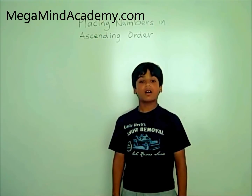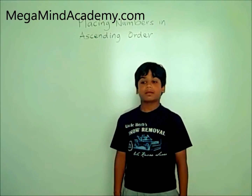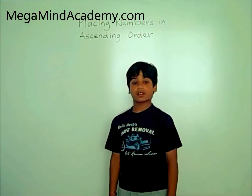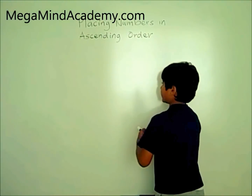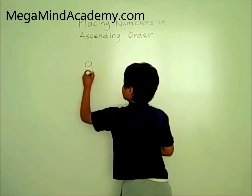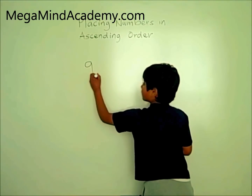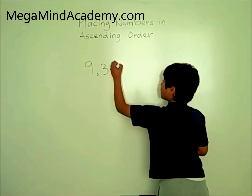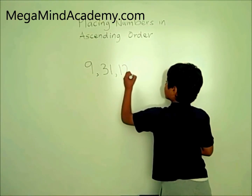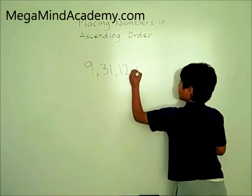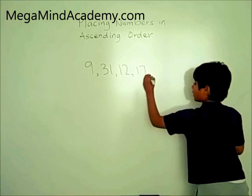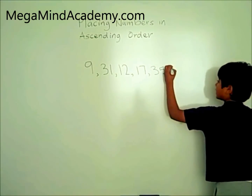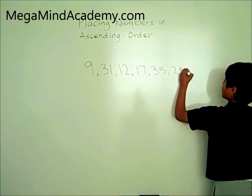Let's look at an example of placing the numbers in ascending order. Let's say the numbers are: 9, 31, 12, 17, 35, 28, and 21.